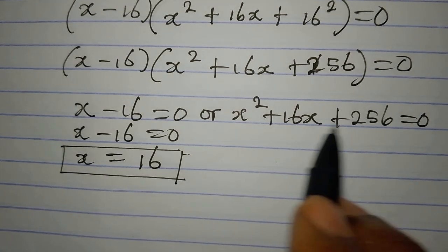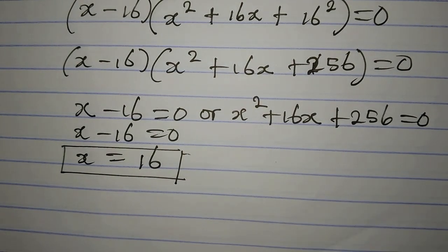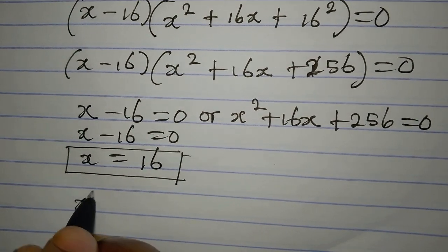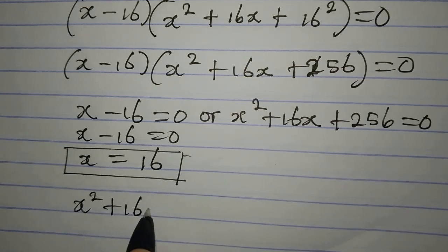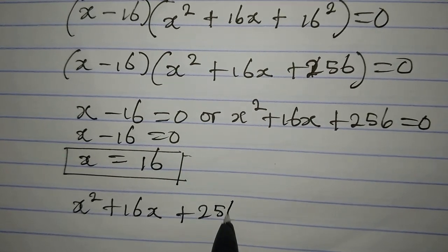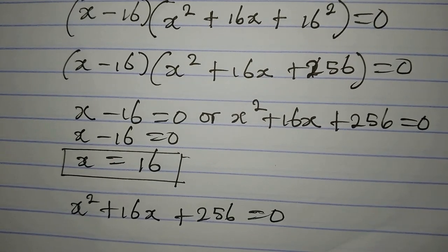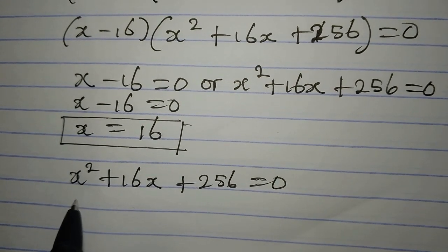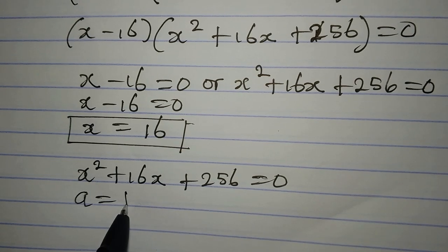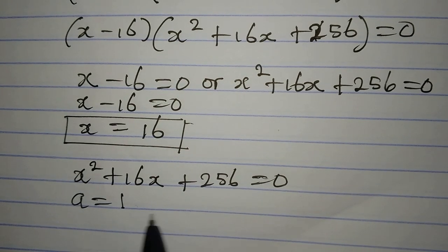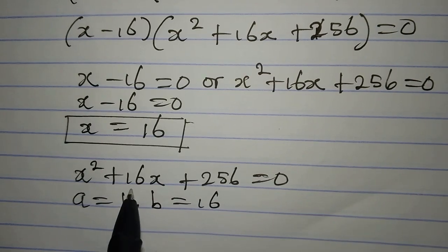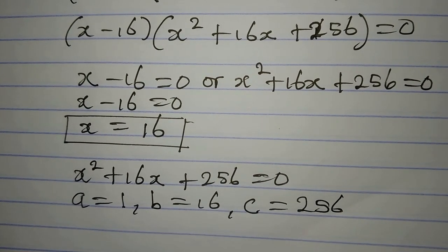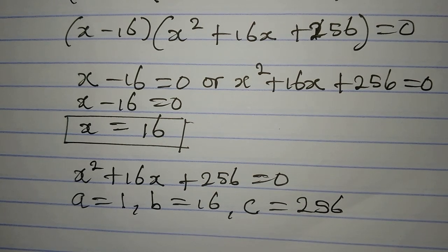Now we go to the quadratic factor to get the second and third values of x, where we have x squared plus 16x plus 256 equals zero. We apply the quadratic formula, where a is 1 (the coefficient of x squared), b is 16, and the constant c is 256.